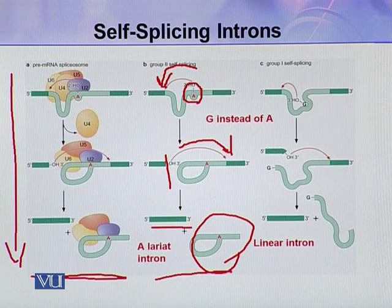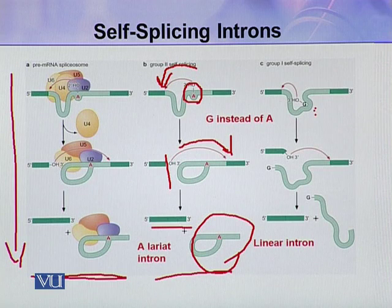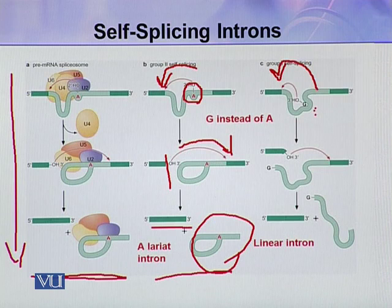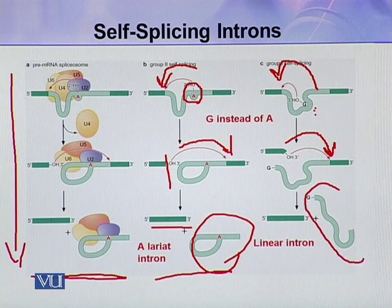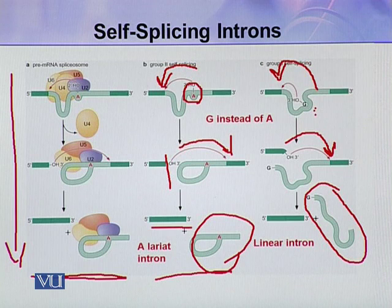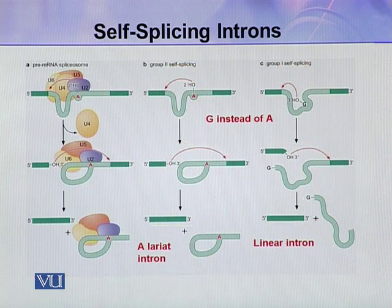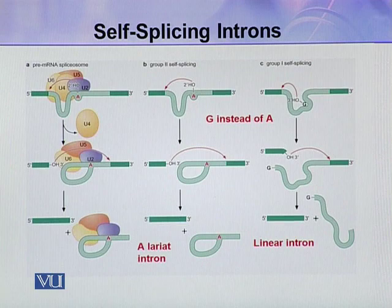In the case of group 1 self-splicing, there is no A at the branch site; instead, a G nucleotide attacks the 5' splice site. The newly freed 5' end then attacks the 3' splice site. The intron released in this case is a linear intron — not a lariat — and the two exons are joined. This figure shows the comparison of all three splicing mechanisms together.